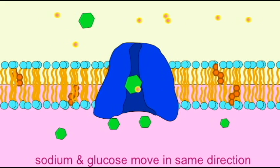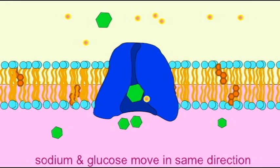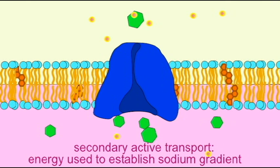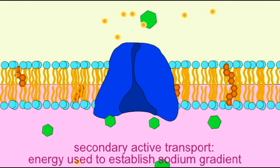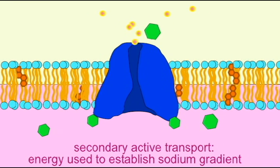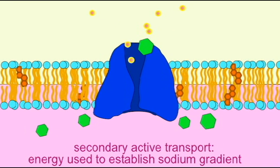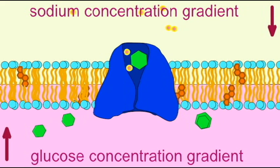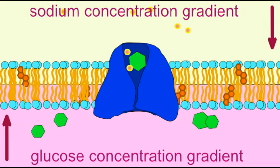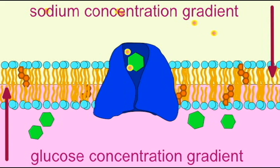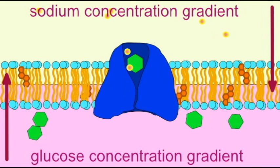It is considered active transport because while energy is not used to drive this co-transporter, nevertheless it only functions because there was a sodium gradient set up that could be used to power this movement. And this sodium gradient was created through the action of the sodium-potassium exchange pump which did require a great deal of ATP energy. And so therefore this is considered as a type of secondary active transport.